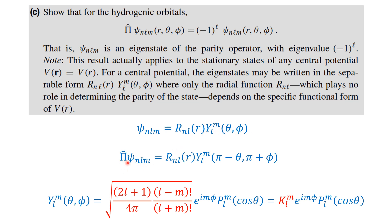When the parity operator Pi-hat acts on the wave function, it will not change the radial part — it will change only the angular part, Y_l^m. By definition, Y_l^m(theta, phi) equals the square root of (2l+1)(l-m)! divided by 4pi(l+m)!, times e^(i m phi), times P_l^m(cos theta).